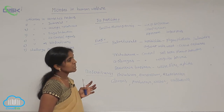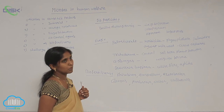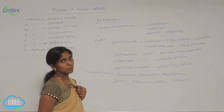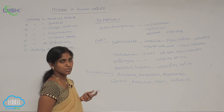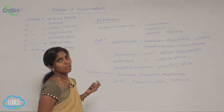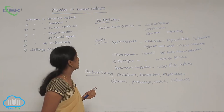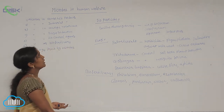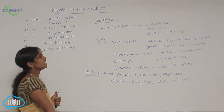Bacillus thuringiensis is one of the best biocontrol agents, and it is also involved in the production of GM crops — genetically modified crops — especially BT cotton, BT tobacco, and BT brinjal. Fungi members also work as biopesticide-releasing organisms.